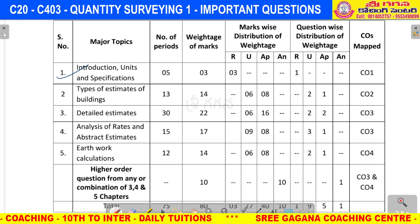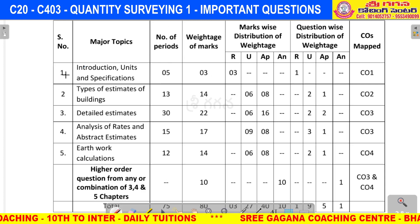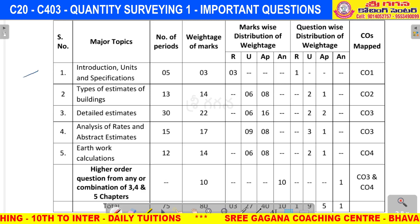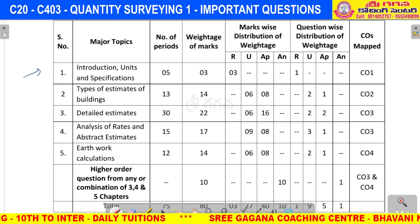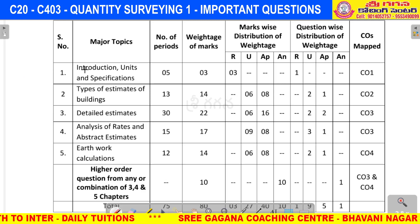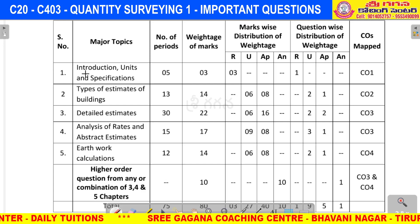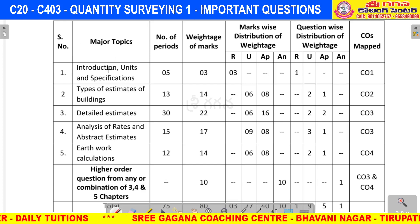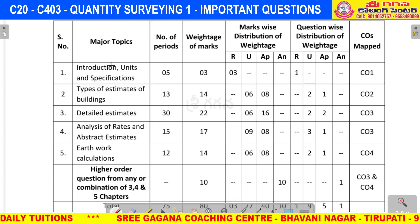In the first unit, we have units for different items of work such as M2 and M3. The topic is Introduction to Quantity Surveying.